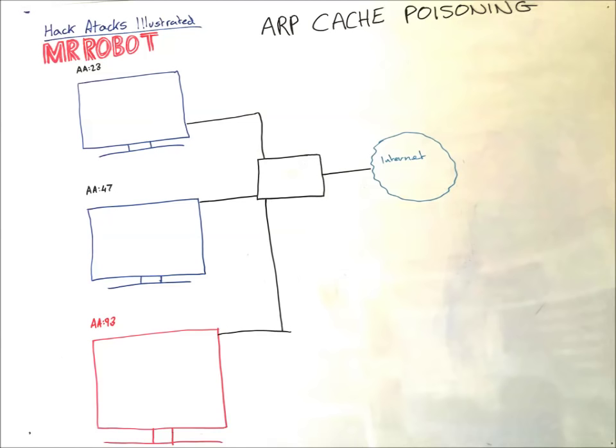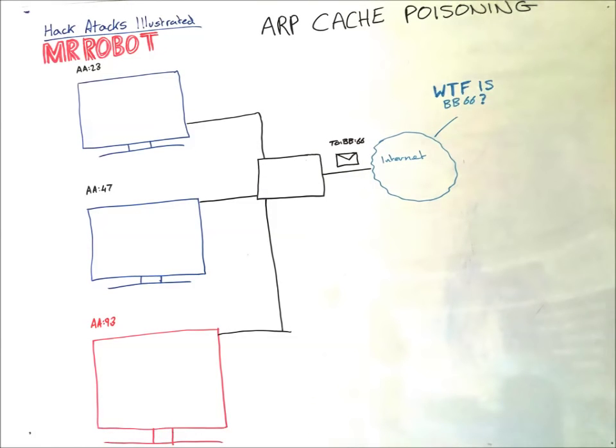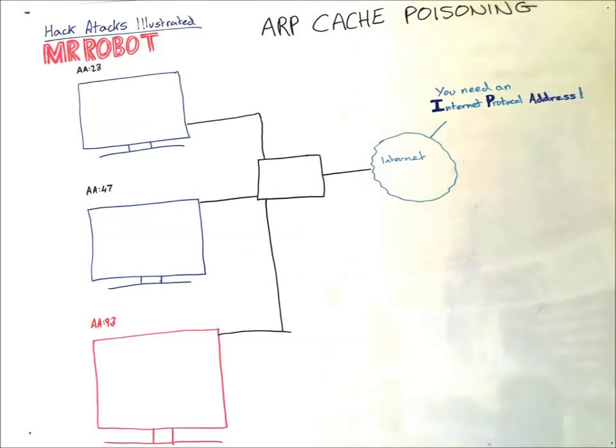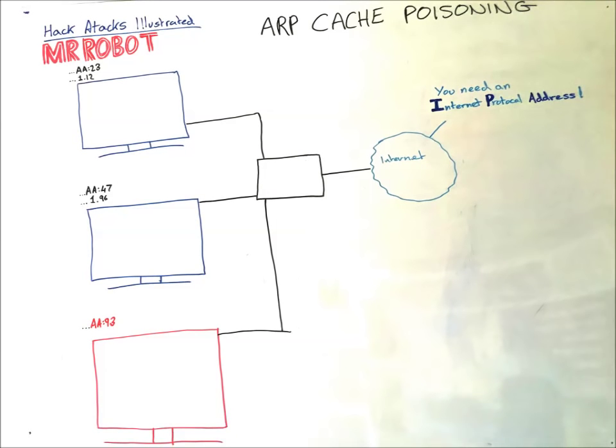When AA13 wants to communicate with AA47, it creates a packet with the address AA47 and sends it on its way. So when it wants to communicate with a computer on the internet, the internet can't deal with that. You need an internet protocol address, or an IP address. So let's give them some IP addresses. We'll call the first one .1.12. The second one will give an IP address of .1.96. And we'll give our attacker an IP address of .1.212.